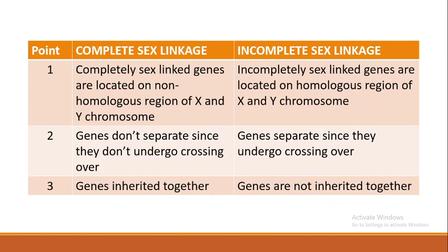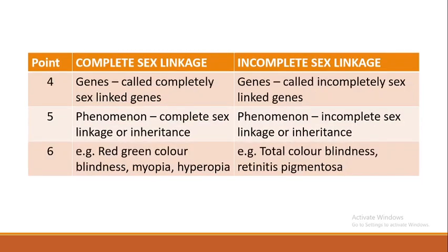Now we'll distinguish between complete sex linkage and incomplete sex linkage — six points, three on this slide and three on the next. Point one: completely sex-linked genes are located on the non-homologous region of X and Y chromosomes, while incompletely sex-linked genes are on the homologous region. Point two: completely sex-linked genes cannot be separated and won't undergo crossing over, whereas genes on the homologous region can be separated and can undergo crossing over. Point three: genes are inherited together in complete sex linkage but not inherited together in incomplete sex linkage.